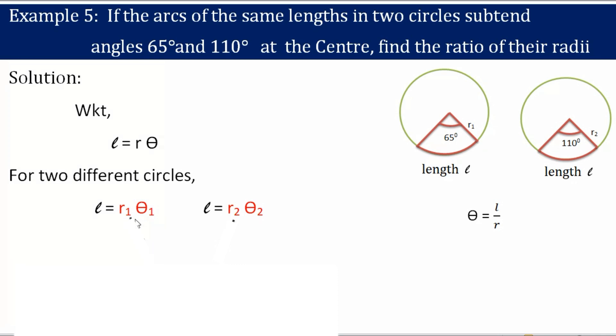Here, the length of two arcs are same. That's why we can equate R1 times theta 1 is equal to R2 times theta 2.